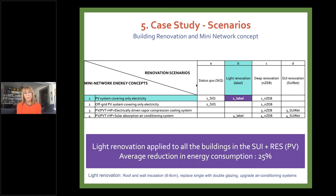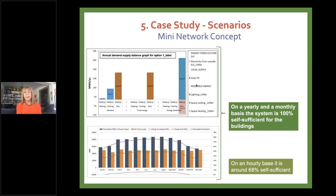For the rest of the buildings on the site, we applied light renovation to all buildings of the urban isle and introduced a mini PV network. This achieved an average reduction in energy consumption of 25 percent. By light renovation we mean roof and wall insulation of around six to eight centimeters, replacement of single with double glazing windows, and upgraded air conditioning systems. The mini network achieved, on a yearly and monthly basis, 100 percent self-sufficiency for the buildings — an remarkable result.